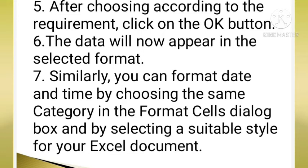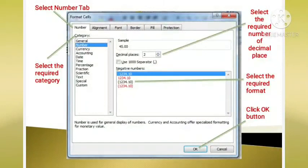Sixth, the data will now appear in the selected format. Seventh, you can format date and time by choosing the same category in the format cells dialog box and by selecting a suitable style for your excel document as we have done for the number. Here, you can see this.